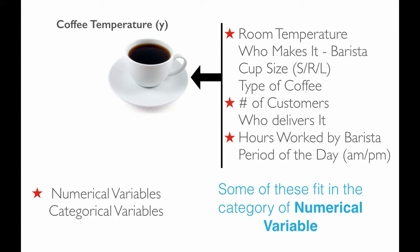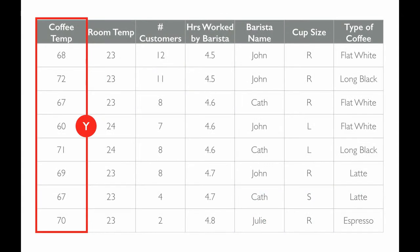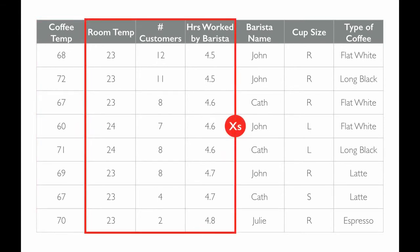Some of these fit in the category of numerical variables. For example, room temperature, number of customers, and hours worked by the barista would fall within numerical variables. If we have a worksheet of data related to this process, the coffee temperature would be lined up in a column — this is our Y variable. Numerical variables are called numerical because the data collected is in the form of numbers — either whole numbers, like number of customers, or fractions, like hours worked or room temperature.